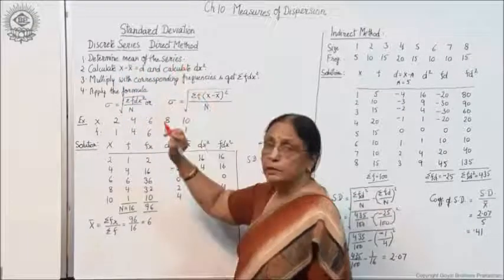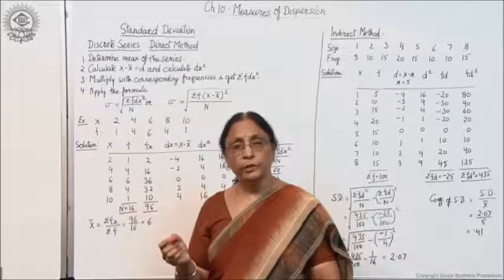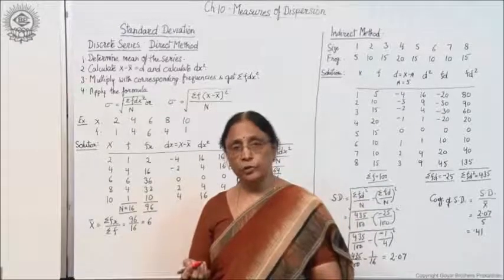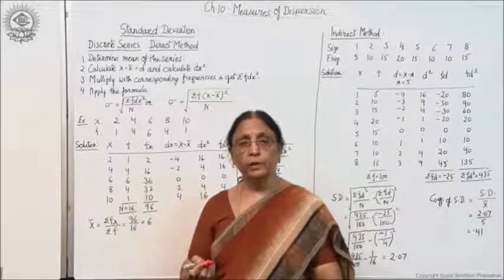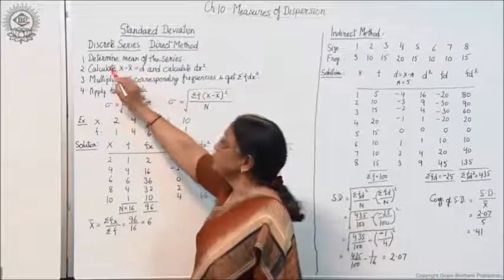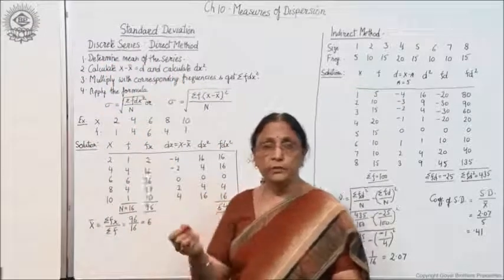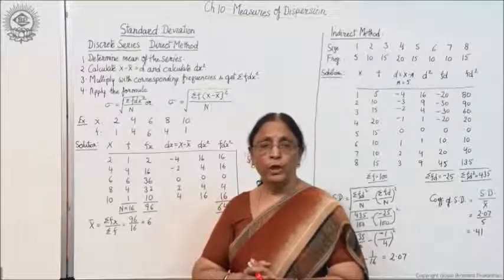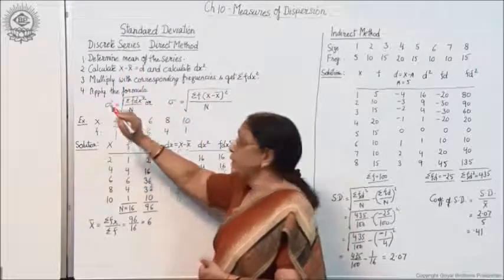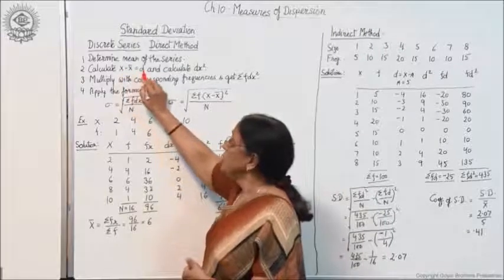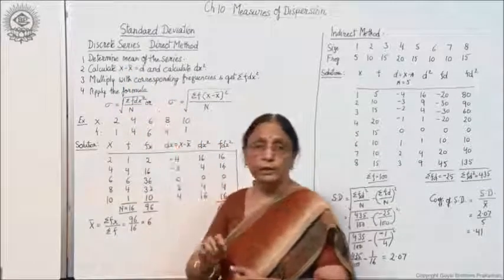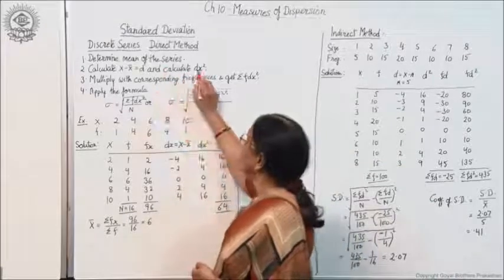First, determine the mean of the series. Direct method is the method in which you take out deviations from the actual mean, not the assumed mean. In case of indirect method, we take out deviations from the assumed mean. So in direct method, you calculate the actual mean and then calculate x minus x-bar, where x-bar is the actual mean. Deviations are taken as x minus x-bar, which equals d.